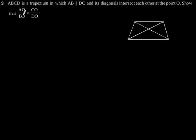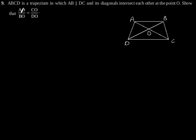Exercise 6.2, question number 9: ABCD is a trapezium in which AB is parallel to DC, and its diagonals intersect each other at point O, such that AO by BO is equal to CO by DO. Suppose this is our trapezium ABCD in which AB is parallel to DC, and its diagonals intersect each other at point O. We need to prove that AO by BO is equal to CO by DO.